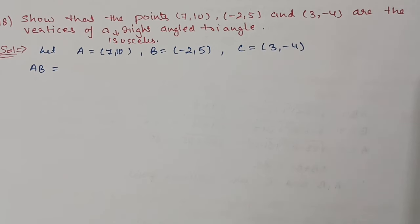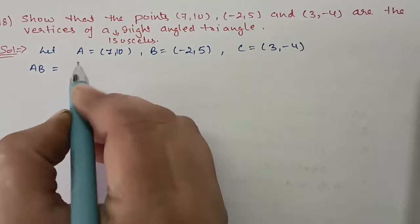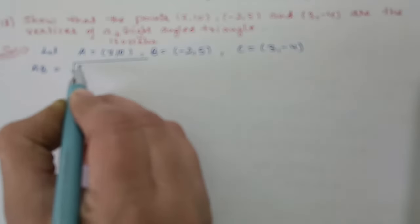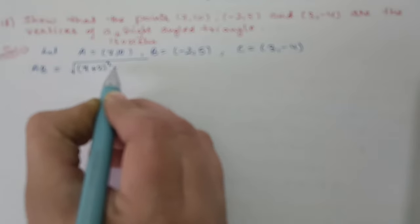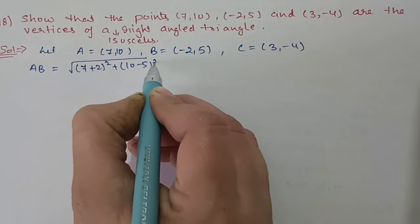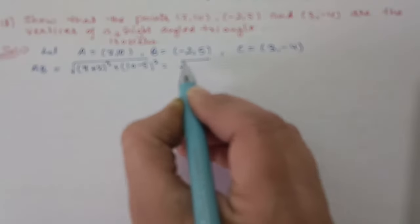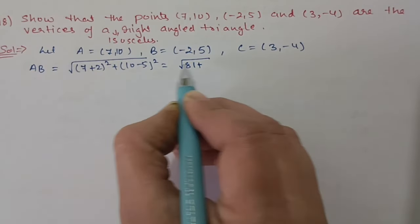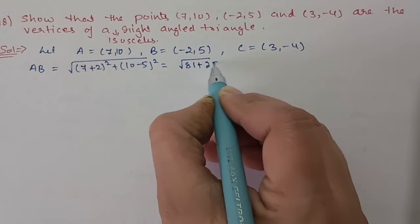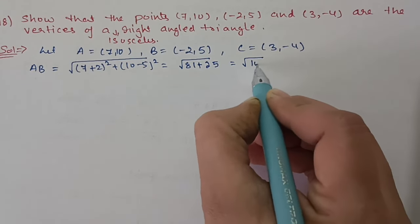Question number 18: Show that points (7,10), (−2,5) and (3,−4) are vertices of an isosceles right-angle triangle. Let A, B and C be the respective points. AB = √((7−(−2))² + (10−5)²) = √(81+25) = √106 units. BC = √((−2−3)² + (5−(−4))²) = √(25+81) = √106 units. So it is an isosceles triangle.